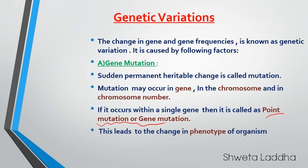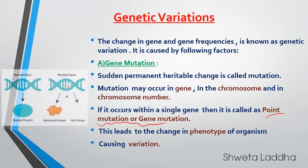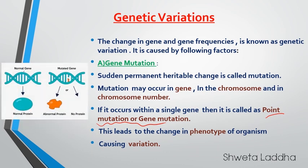Point mutation leads to a change in the phenotype of an organism, which will cause variation. As you can see in this picture, this was a normal gene which gave rise to normal protein. But if there is a point mutation, it gives rise to abnormal protein formation or no protein at all. Obviously, the phenotype will change and it will lead to variation.